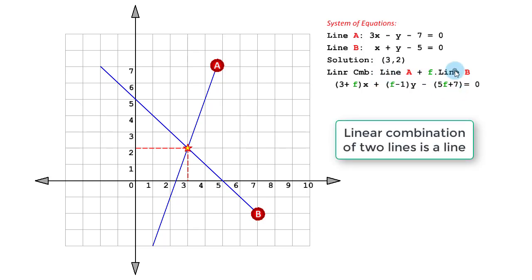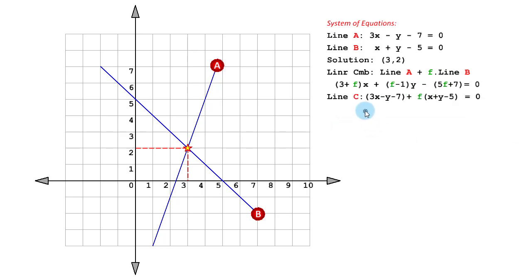Mixing of line A and line B, blending of those two lines, gives us a third line. Let us call it line C. This line C is made up of line A (3x - y - 7) and line B multiplied by f (x + y - 5) equal to 0.